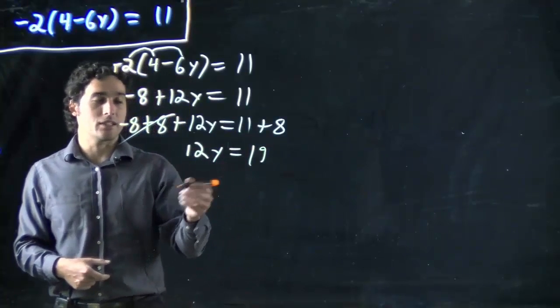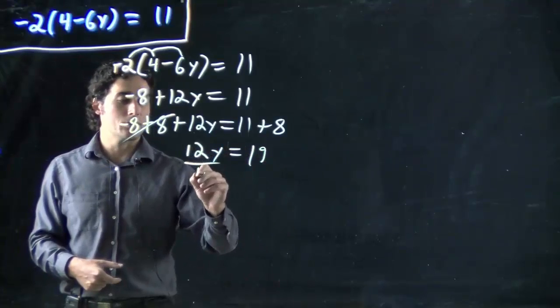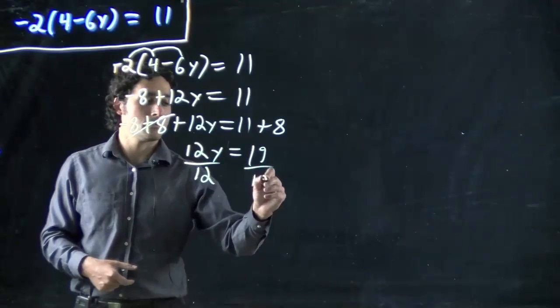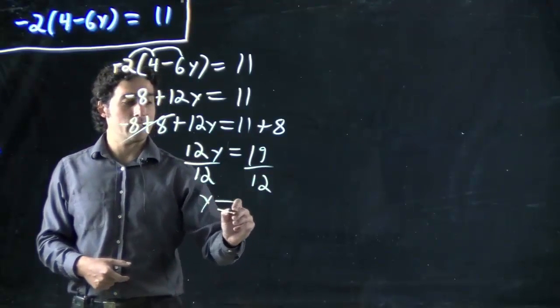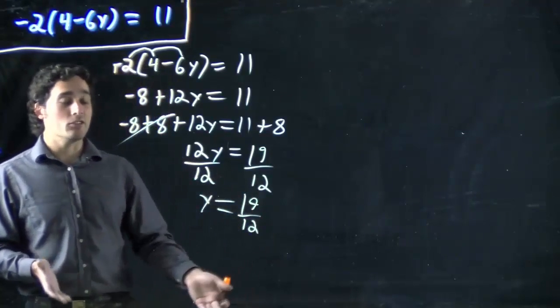And then we've got to do the opposite. Again, what's being done to y? We're multiplying. So divide both sides by 12. And we've got y equals 19 over 12, which we can't reduce.